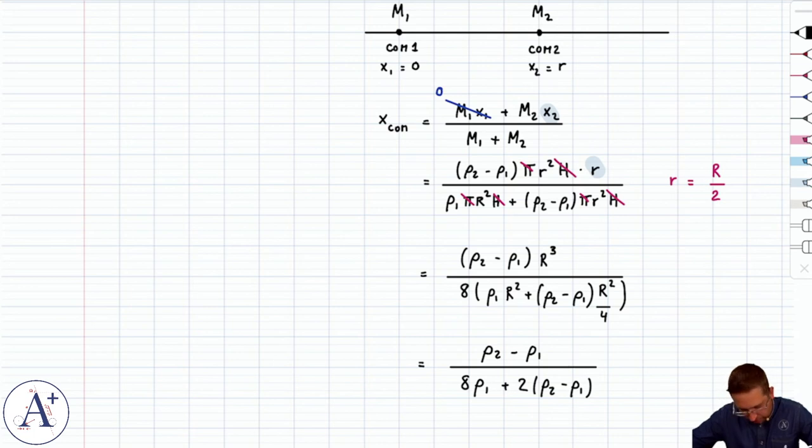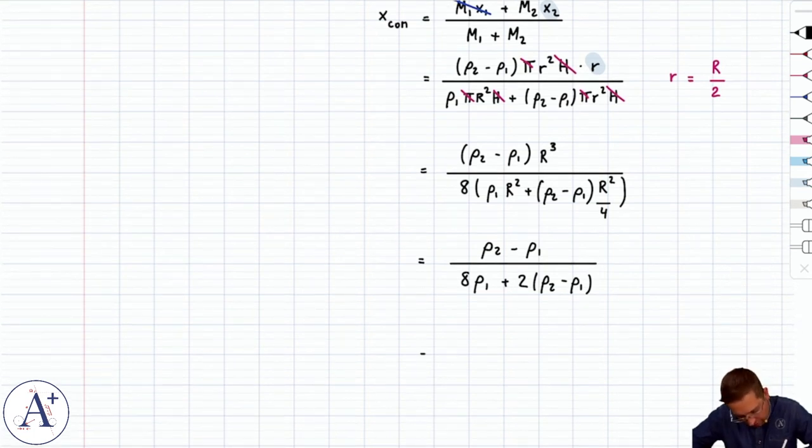Minus rho2 minus rho1, and you could do one better here, say that it's rho2 minus rho1 divided by 6 rho1 plus 2 rho2, and that would be x center of mass.